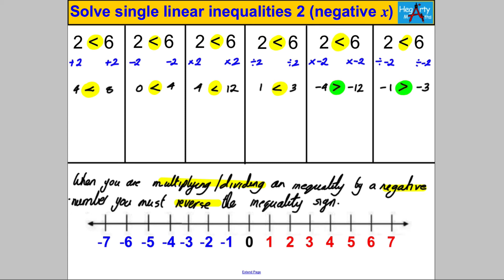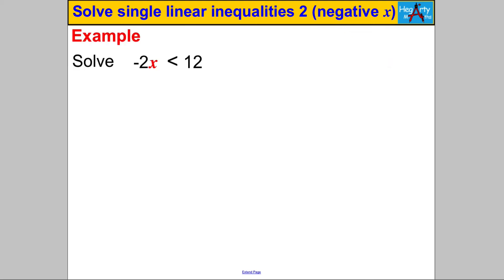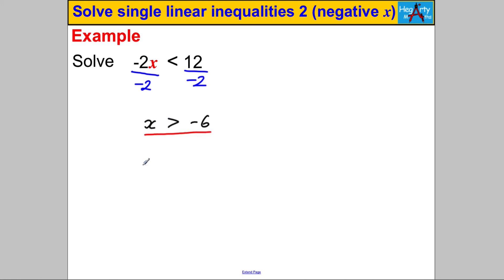Pause the video and have a go. Here's the first one — solve: -2x < 12. I want to get x by itself, so I divide both sides by -2. On the left I get x; on the right, 12 ÷ (-2) = -6. Because I divided by a negative number, I must remember to reverse the inequality sign. The answer is x > -6.